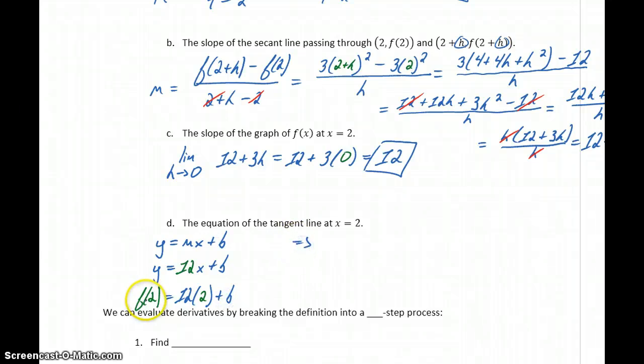So the original function 3x squared evaluated at 2 will give us 12 equals 24 + b. Subtracting 24 from both sides gives us a value of negative 12 for b.